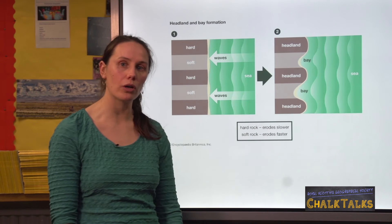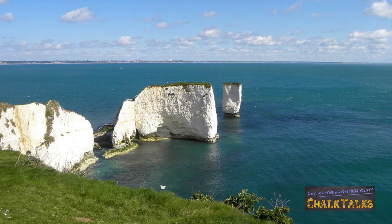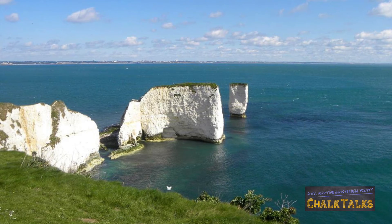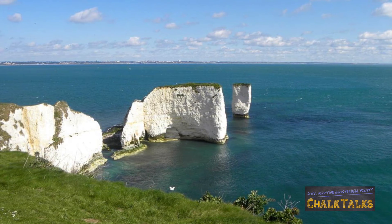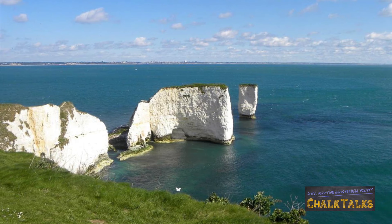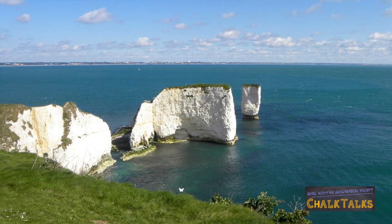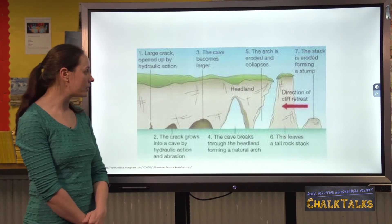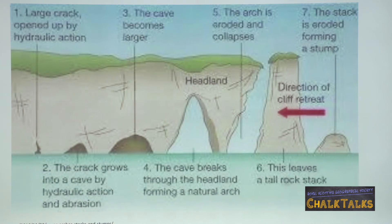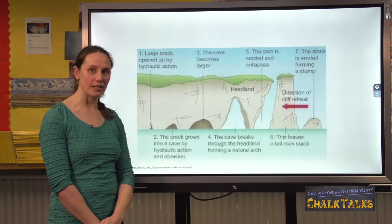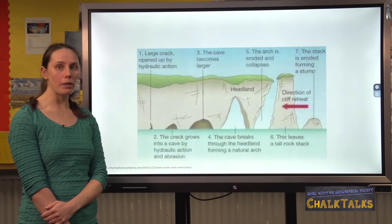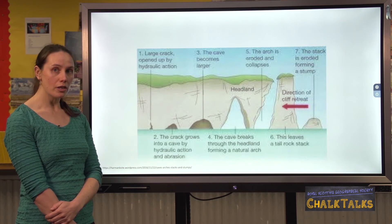Caves, arches and stacks are erosional features often found on headlands. Old Harry Rocks to the north of Swanage is a stunning example. Your explanation should start with differential erosion, with weaker areas in a cliff eroded more quickly by hydraulic action and corrasion. Vertical lines of weakness known as faults are eroded into cracks and then into caves. Once caves erode right through the headland they become arches, which continue to widen through corrasion and hydraulic action. The top of the arch is attacked by sub-aerial processes such as freeze-thaw weathering, eventually causing it to collapse and leave a stack. The material is broken up by attrition and used in corrasion to continue eroding the cliffs.